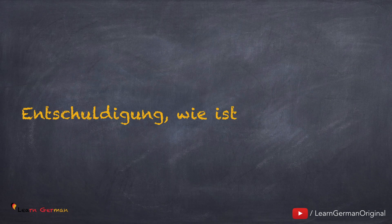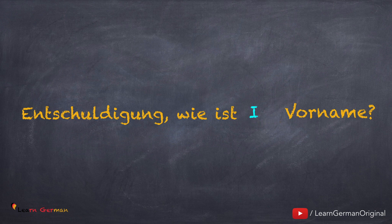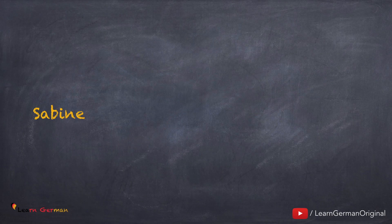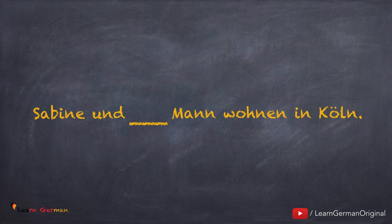Let's do another one. Your answer should be: 'Entschuldigung, wie ist Ihr Vorname?' And here's the last one. In this case, we need a possessive pronoun for Sabine: 'Sabine und ihr Mann wohnen in Köln.'